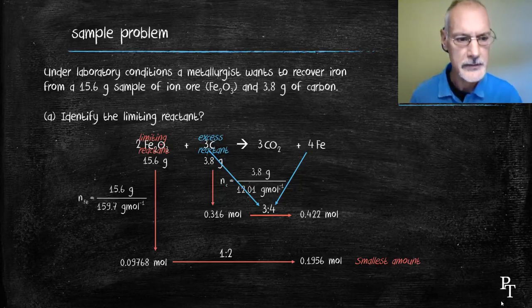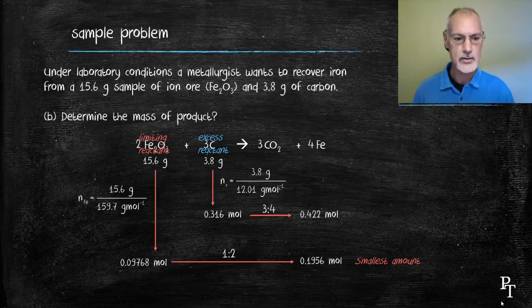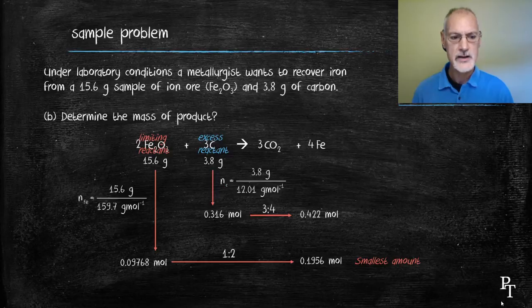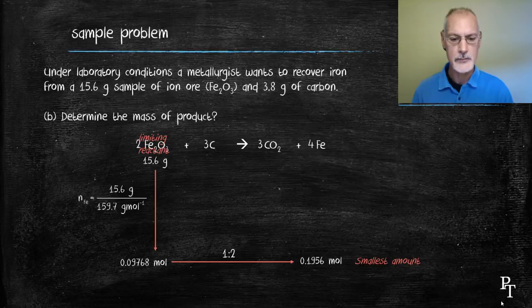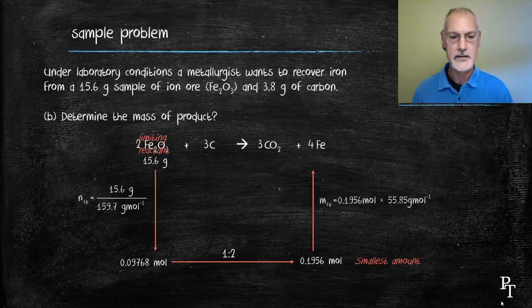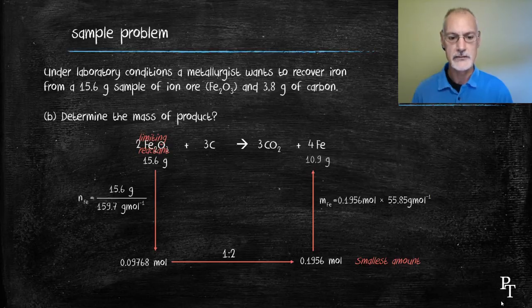Let's continue on and determine how much iron would I actually make. So much like in my analogy, I ignore the information about my excess reagent and just focus on my limiting reagent information. So using that number of moles of iron, I convert that to mass using the molar mass of iron, and I arrive at 10.9 grams of iron.